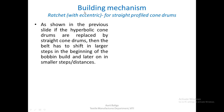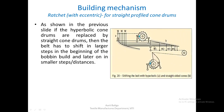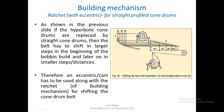The ratchet alone is not enough to shift the cone drum belt because it must now be done in unequal varying amounts. We will need an eccentric along with the ratchet. When hyperbolic cone drums are replaced by straight cone drums, the belt has to shift in larger steps at the beginning and later in smaller steps. Therefore an eccentric or a cam has to be used along with the ratchet of the building mechanism for shifting the cone drum belt.